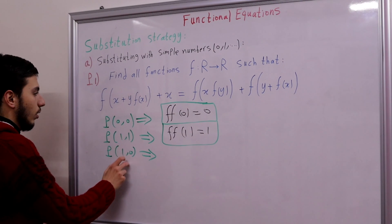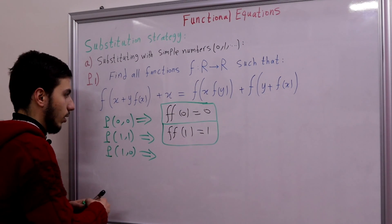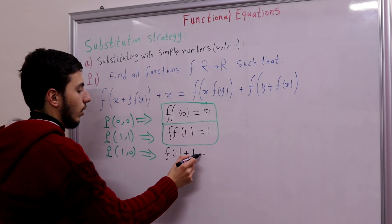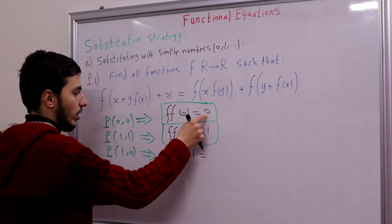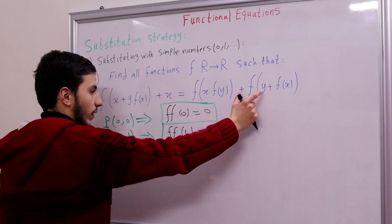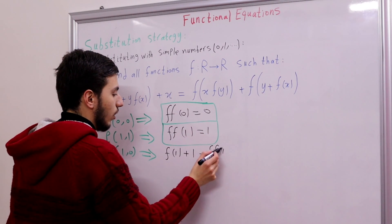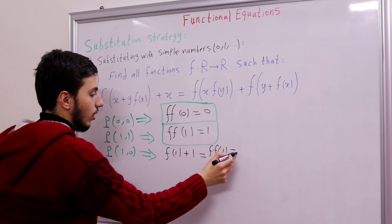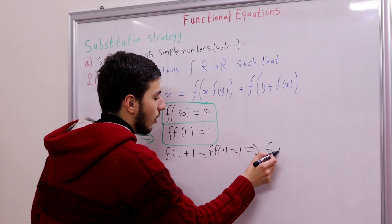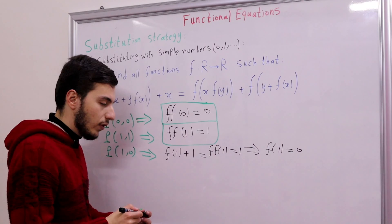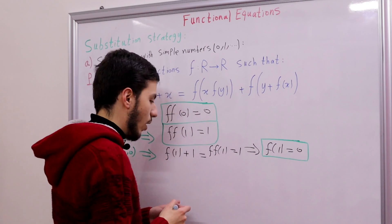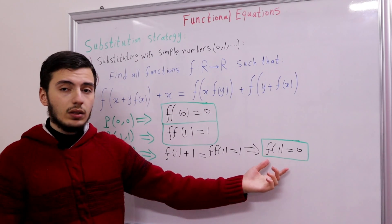We have f(f(1)) with f(1) here. Substituting: f(1 + 1) = f(f(0)) = 0, so that is 0. And we have f(f(f(1))) = 1. From this we can conclude the value of f(1) — and f(1) is simply 0. That's our first evaluated value.